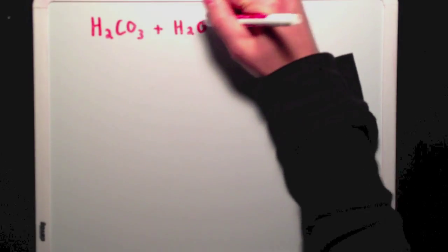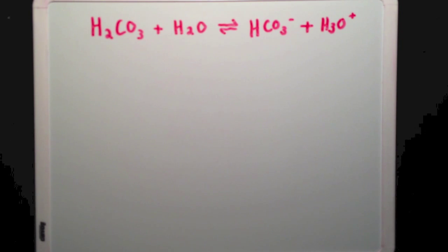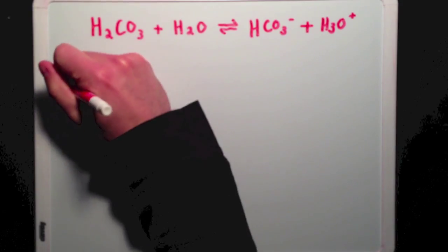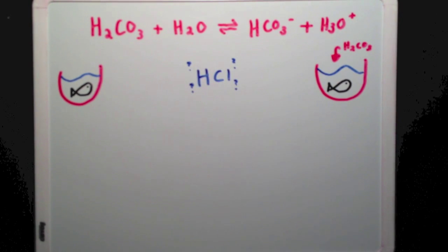All buffers are actually weak acids in equilibrium with their conjugate bases. In fact, carbonic acid is the buffer found in human blood. So how do buffers work exactly? Well, let's say we have two fishbowls, and we only add carbonic acid to one. What happens if we then add a strong acid like hydrochloric acid to both bowls?